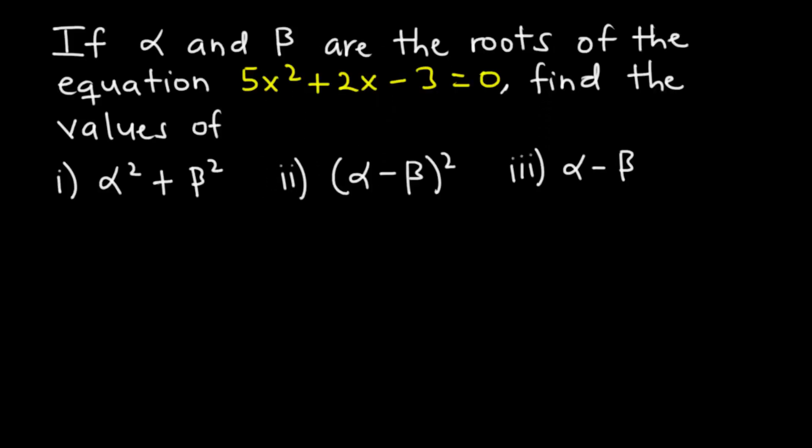In today's video we are going to solve some questions regarding the sum of roots, that is alpha plus beta, and product of roots, alpha beta, of a quadratic equation. We have a question: if alpha and beta are the roots of the equation 5x squared plus 2x minus 3 equals 0, find the values of alpha squared plus beta squared, alpha minus beta all squared, and alpha minus beta.